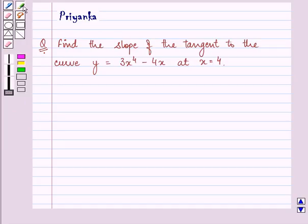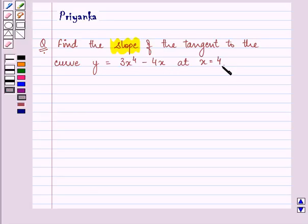It says, find the slope of the tangent to the curve y equals 3x raised to the power 4 minus 4x at x equals 4. Now before proceeding on with the solution,